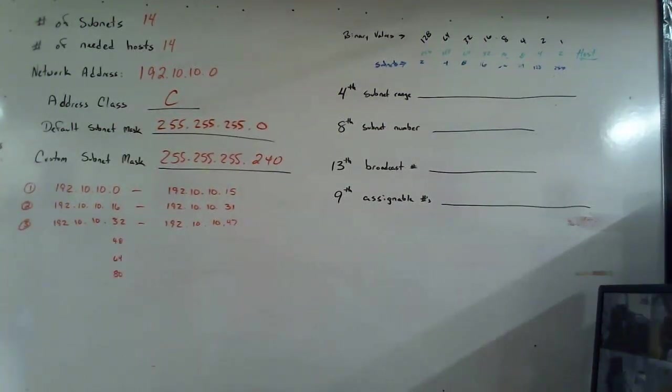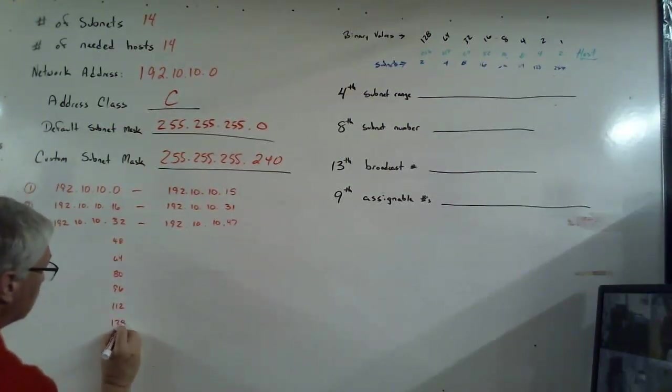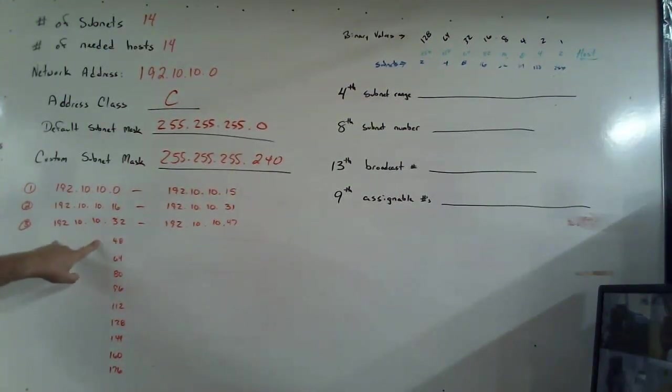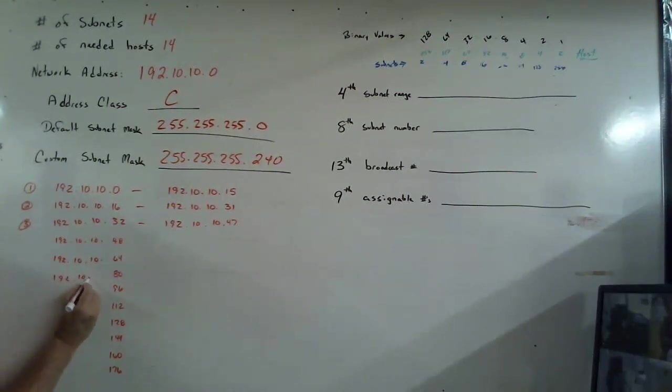And I can keep on going down across here with 96, 112, 128, 144, 160, 176. And let's stop there for a moment and put in the 192.10.10. That's the same for each of these. 192.10.10, 192.10.10, 192.10.10, 192.10.10, 192.10.10, 192.10.10, monotonous, but it is the way it works.